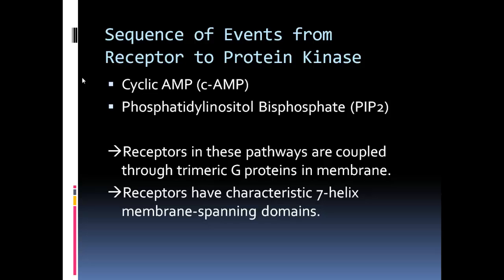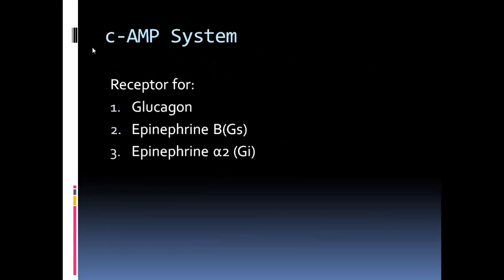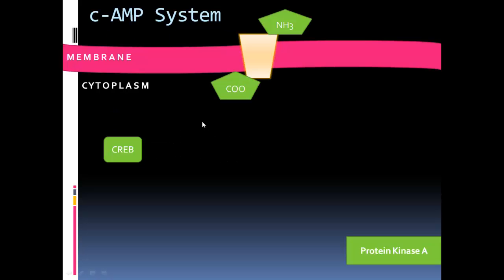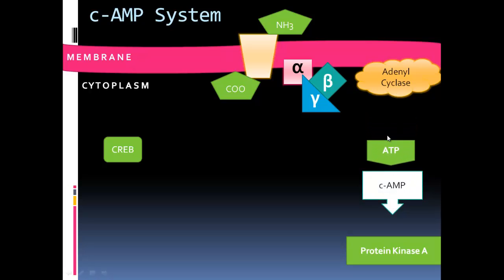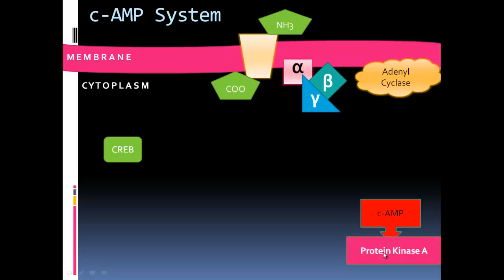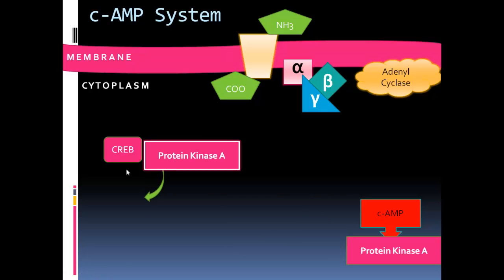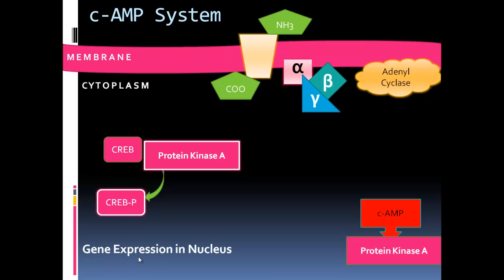For the cAMP system, receptors include those for glucagon, epinephrine beta, and epinephrine alpha-2. In the cAMP system, the alpha-beta-gamma subunit arrives alongside adenylyl cyclase. ATP comes in, cAMP is produced, cAMP activates protein kinase A. Activated protein kinase A then binds to CREB, which becomes phosphorylated — this is responsible for gene expression in the nucleus and the continuation of genetic development. Protein kinase A also helps in activating other protein kinases.